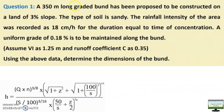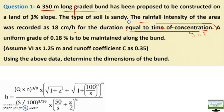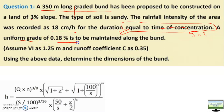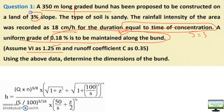The question states: a 350-meter long graded bund. Land slope is 3%. Land fall is 18 centimeters per hour for the time of concentration. If you don't know the importance of time of concentration, I have made a video in the soil and water conservation playlist. Uniform grade of 0.18% along the bund means it is the longitudinal slope.